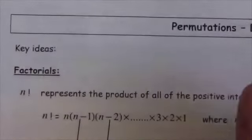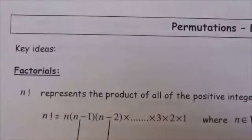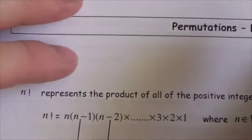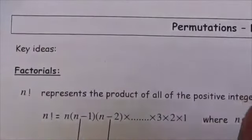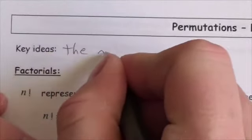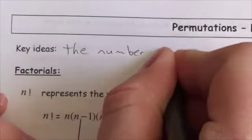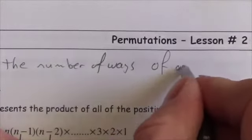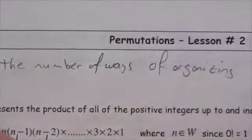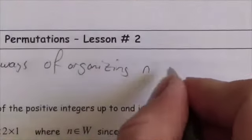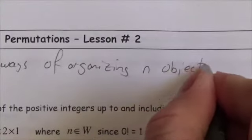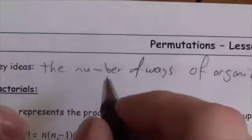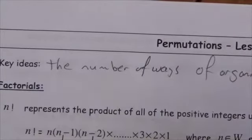To start our discussion on permutations, I want to relate this back to what we were doing with the fundamental counting principle. Notice that the number of ways of organizing n objects — if you've got all n objects, think about the number of subtasks. You've got n subtasks.